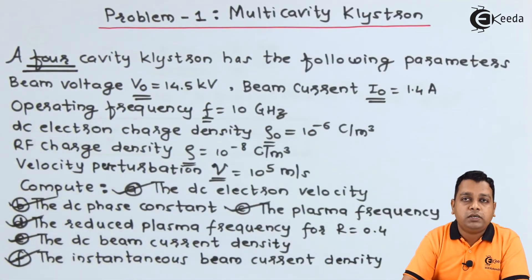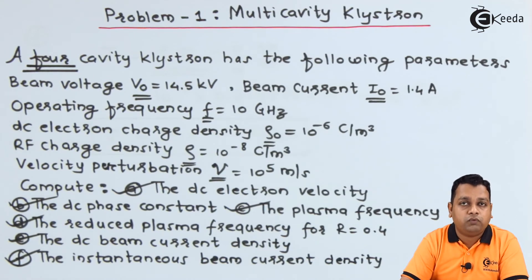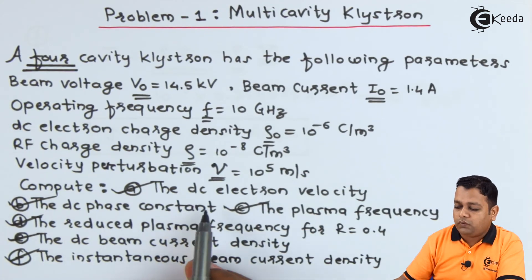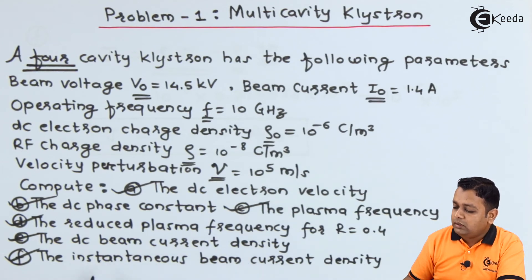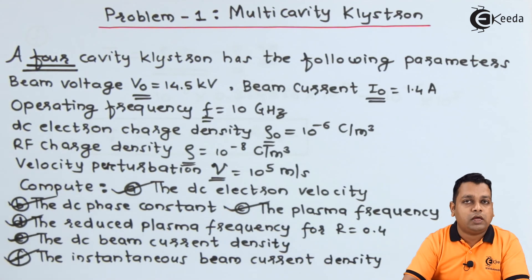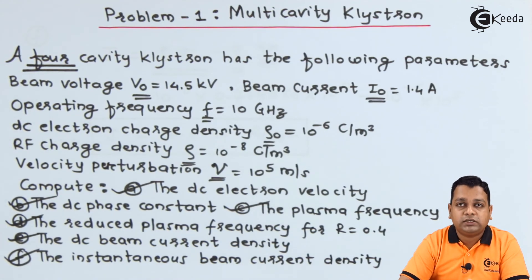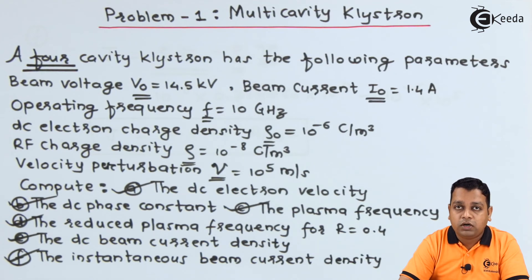To summarize, for this 4-cavity klystron problem, we were provided various specification values and calculated: DC electron velocity, DC phase constant, plasma frequency, reduced plasma frequency, DC beam current density, and instantaneous beam current density. In the next lecture, we will solve another problem based on multi-cavity klystron concepts. I hope you like our videos and are benefited by the knowledge of microwave engineering. You can subscribe to the Ekida channel. Thank you.